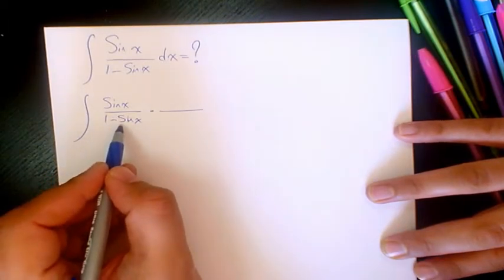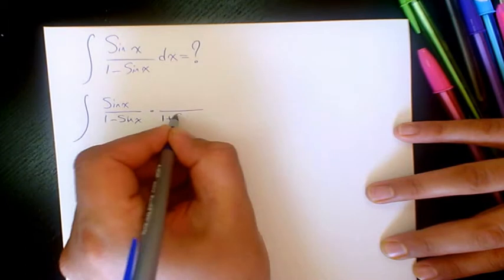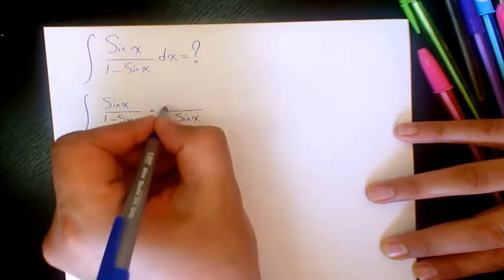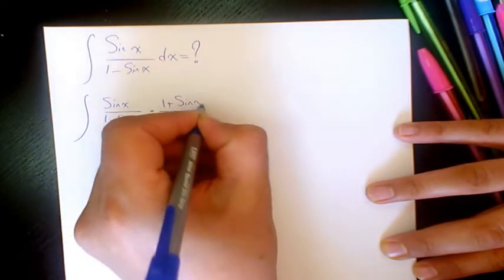So here in the denominator, I have 1 minus sine x. It means that I multiply it by 1 plus sine x and 1 plus sine x.